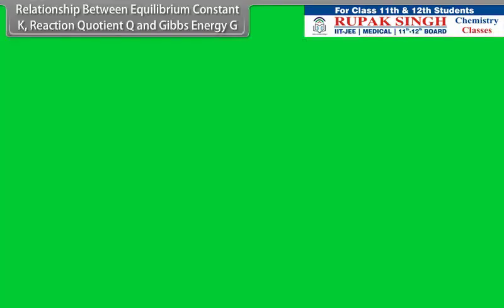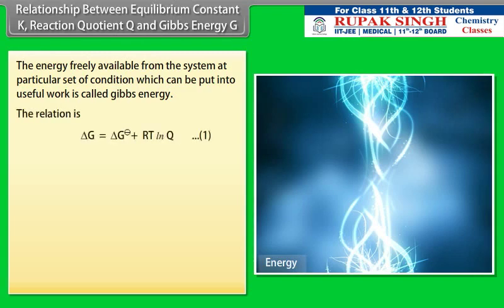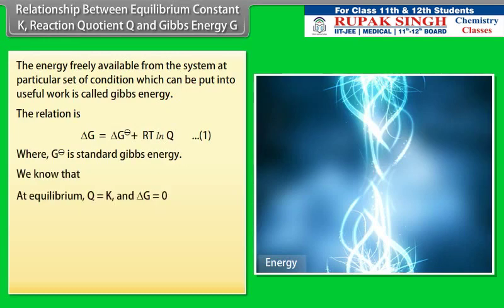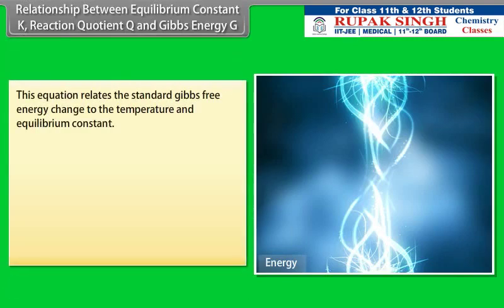Relationship between equilibrium constant K, reaction quotient Q, and Gibbs energy G: The energy freely available from the system at a particular set of conditions that can be put into useful work is called Gibbs energy. At equilibrium, Q equals K and delta-G equals zero. This equation relates the standard Gibbs free energy change to temperature and the equilibrium constant.